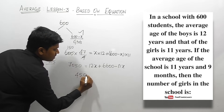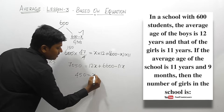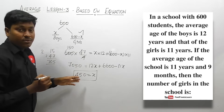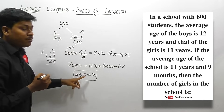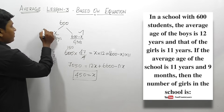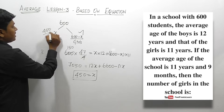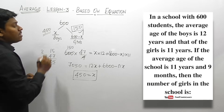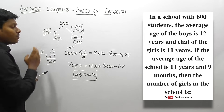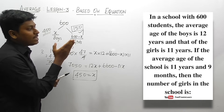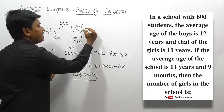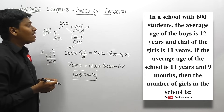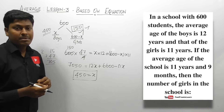So x equals 450 means the number of boys is 450. The remaining students are girls: 600 minus 450 equals 150. Our target was to find the number of girls, so the answer is 150 girls in the school. Finally, we got answer 150 for question number four.